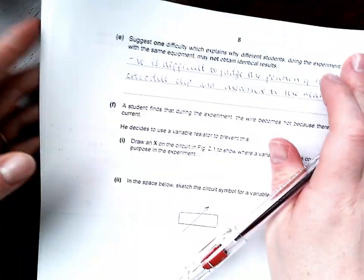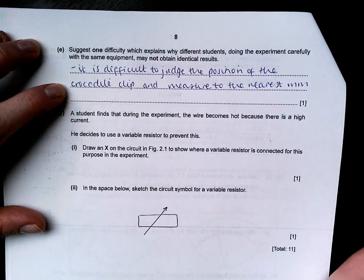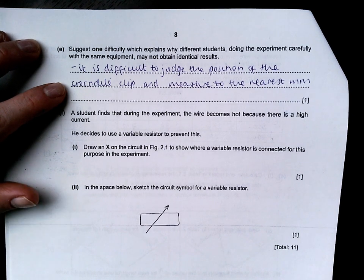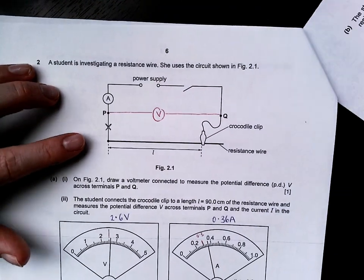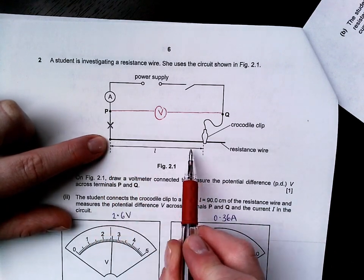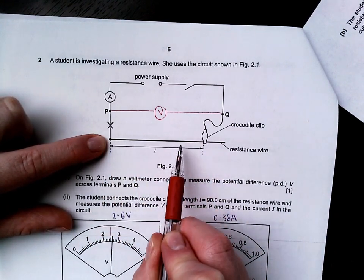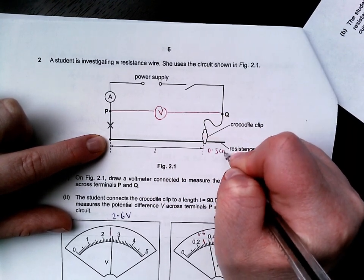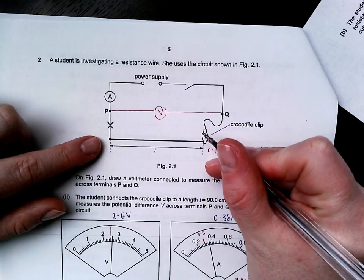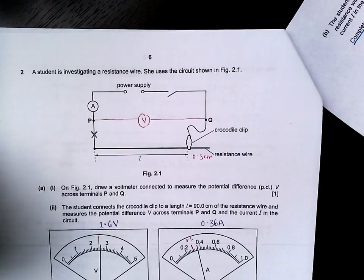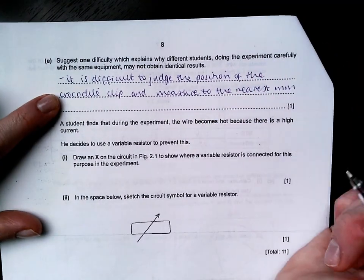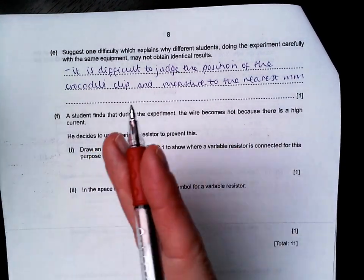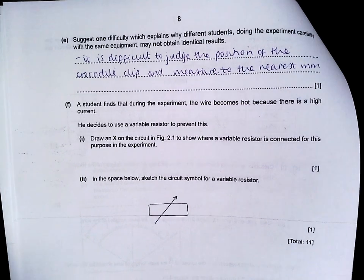In part E, suggest one difficulty, which explains why different students doing the experiment carefully with the same equipment may not obtain identical results. You saw this practical in the classroom. The crocodile clip itself is about 0.5 centimeters wide. Being very specific about measuring to the nearest millimeter is very unlikely to be accurate. It's very difficult to judge the position of the crocodile clip and measure it to the nearest millimeter, which is going to change our numbers. So they won't be identical.